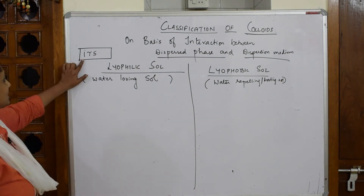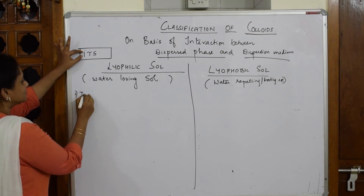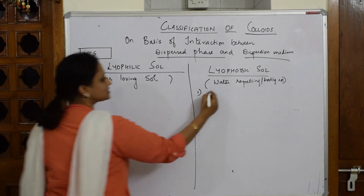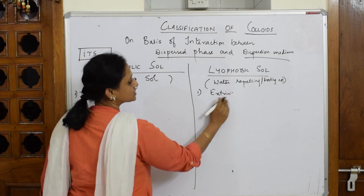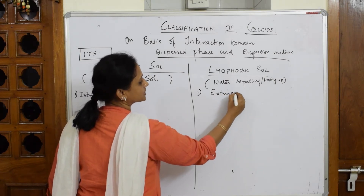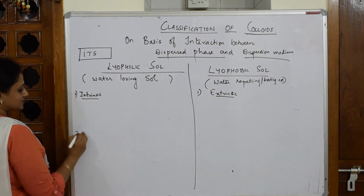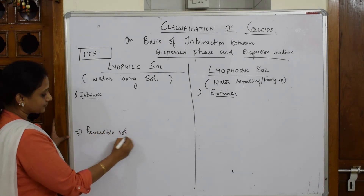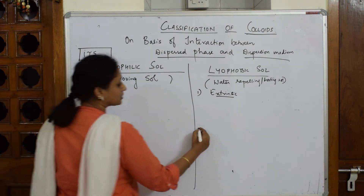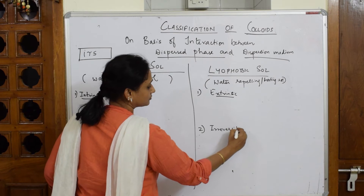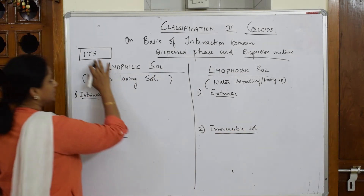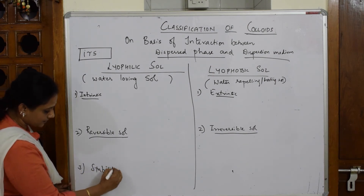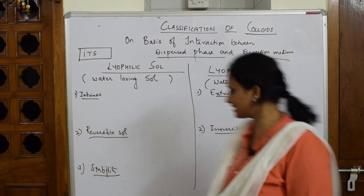Now apply IRS: I stands for Intrinsic — and its opposite for lyophobic is Extrinsic. R stands for Reversible sol — and its opposite is Irreversible sol. S stands for Stability — and its opposite is Unstable.